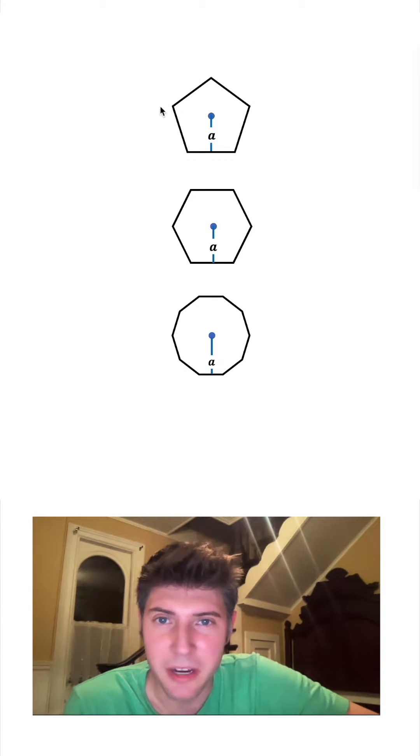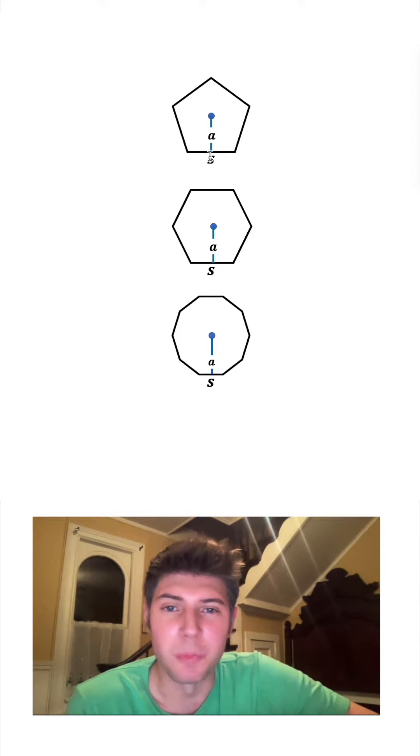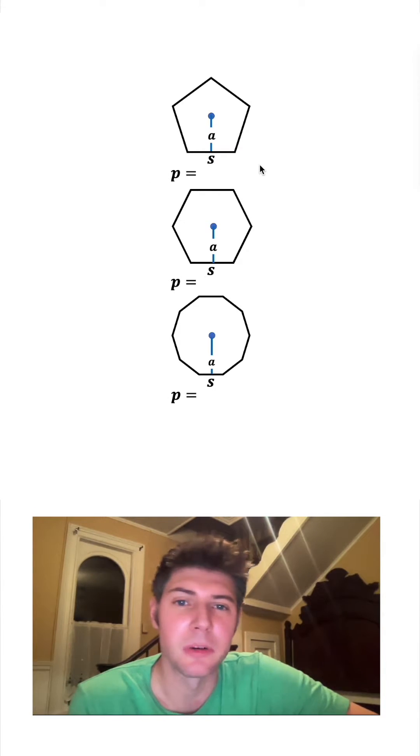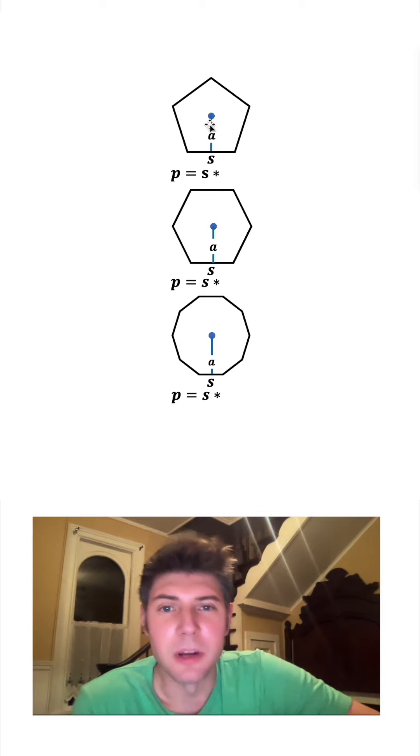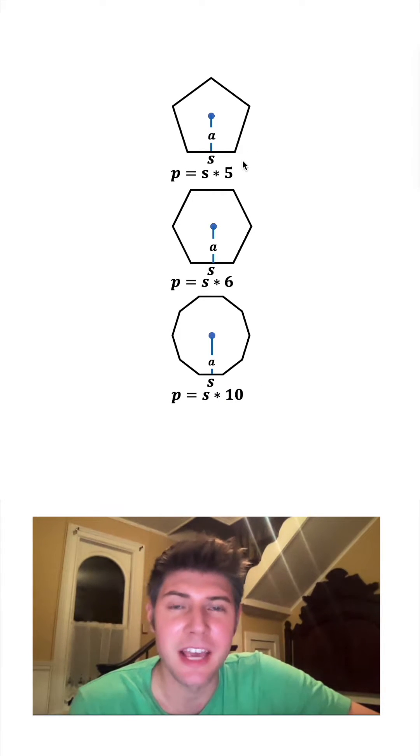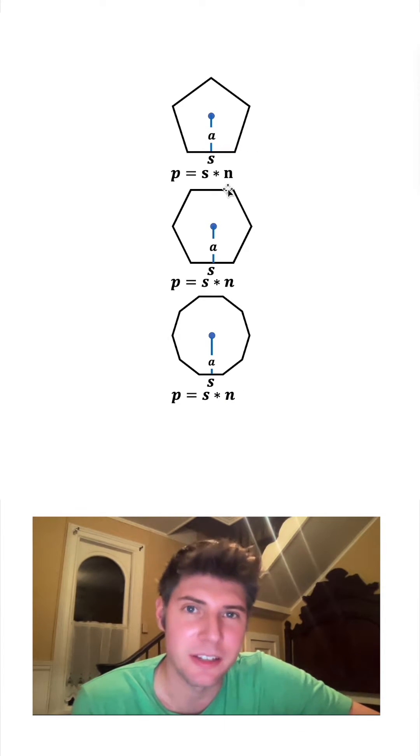To find the perimeter, that's all the way around the figure. So if this one side length is S, then the perimeter, which we'll call P, is S times the number of sides. So it'd be five for this one, six for this middle one, ten for this bottom one. But in the general case, we can just say a figure has N sides, so we would call that S times N.